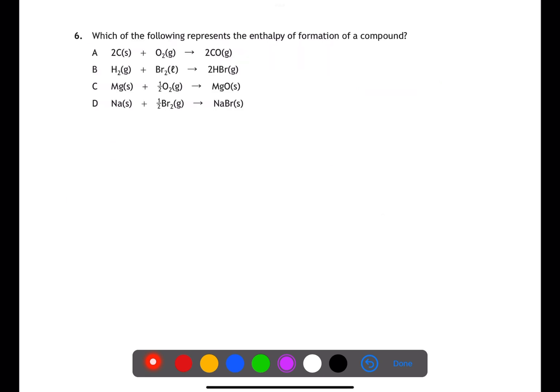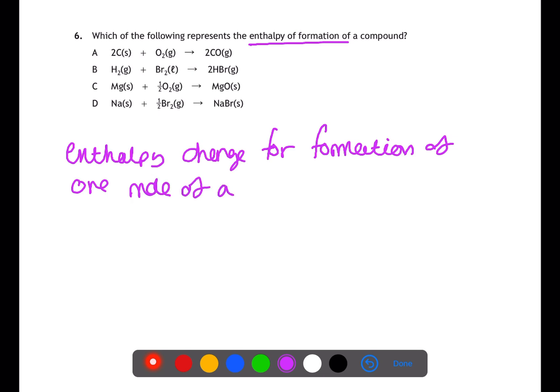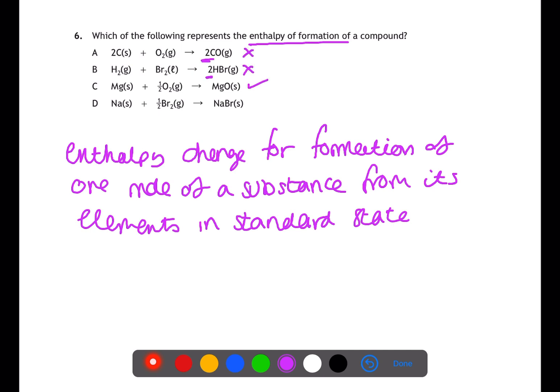Question 6 is testing your knowledge of definitions. The enthalpy of formation of a substance is the enthalpy change associated with the formation of one mole of a substance from its elements in standard states. For answer C we have the elements in the standard states and we're creating one mole of the substance. For answer D bromine is not in its standard state as it should be a liquid therefore the answer is C.